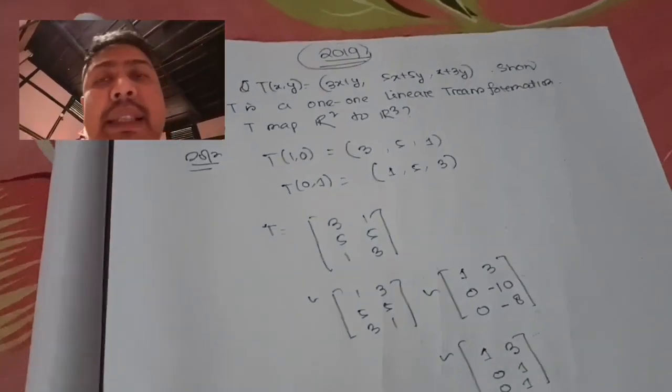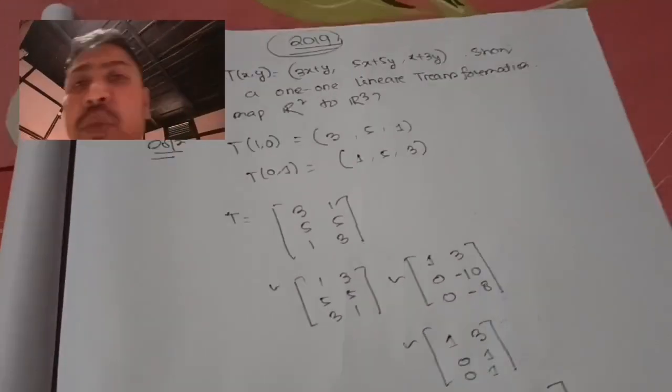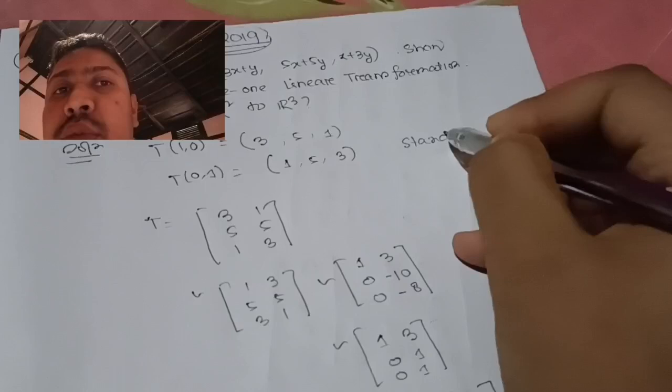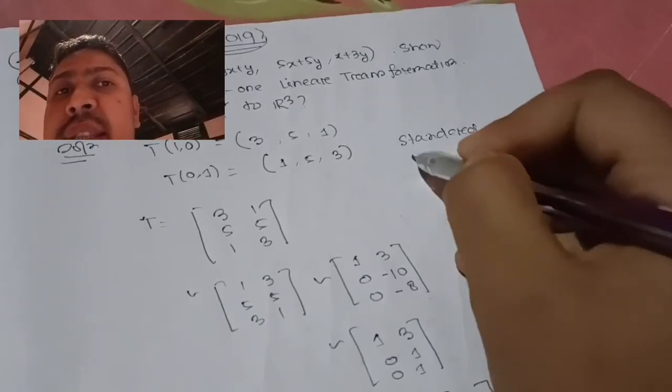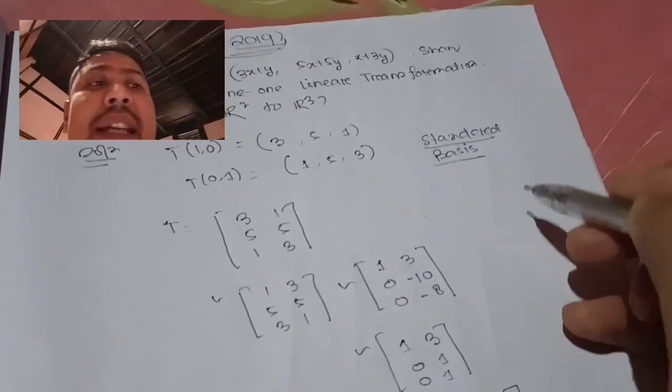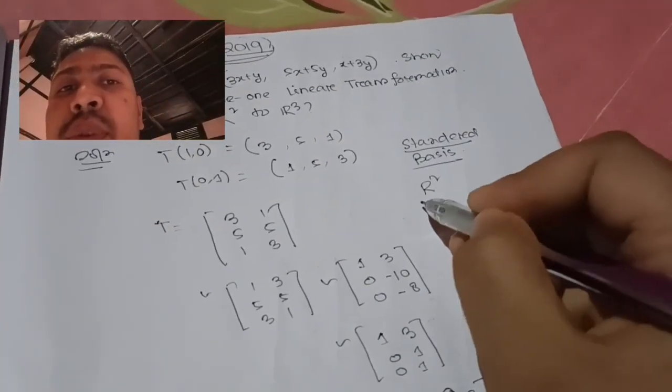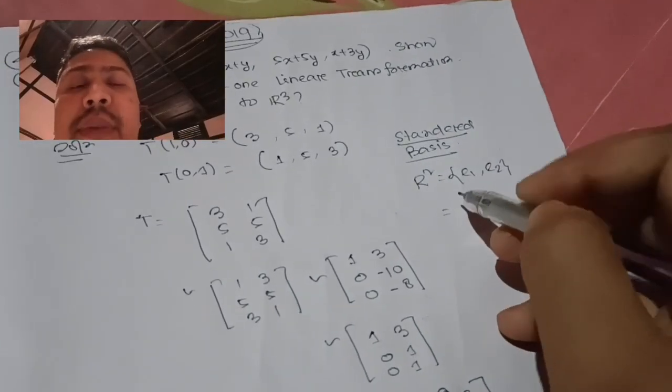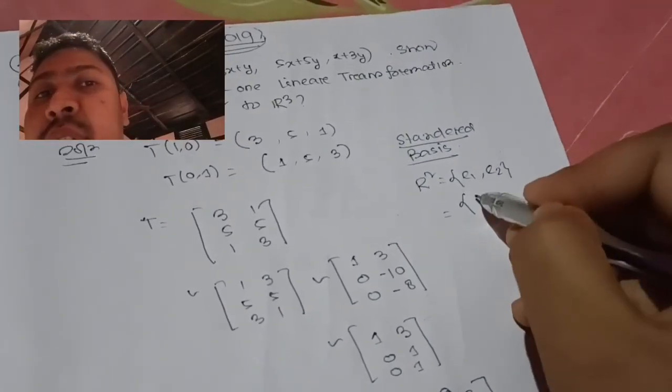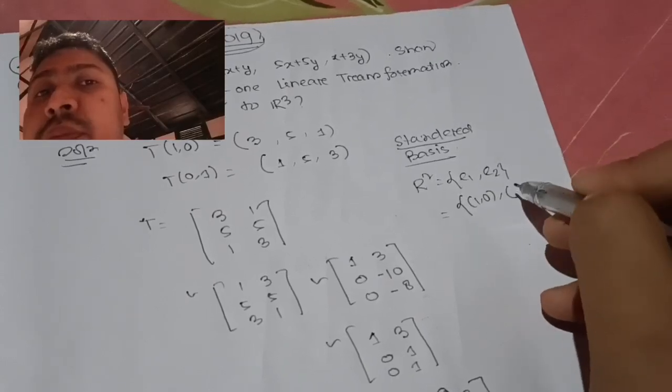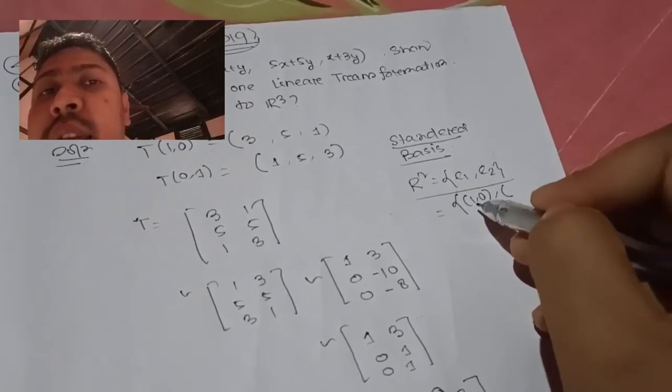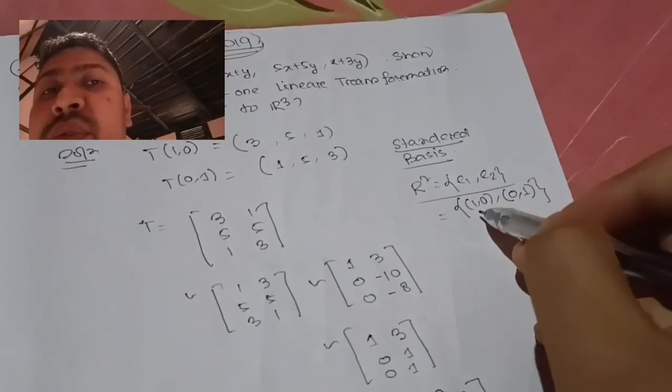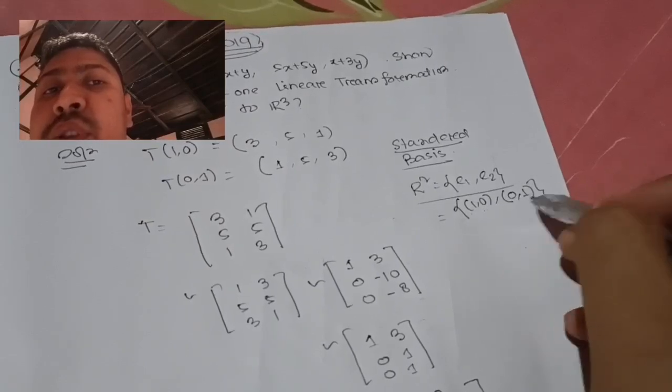I will check this with the help of standard basis. The standard basis of R² is e₁ and e₂. e₁ is (1,0) and e₂ is (0,1). So the standard basis is {(1,0), (0,1)}.